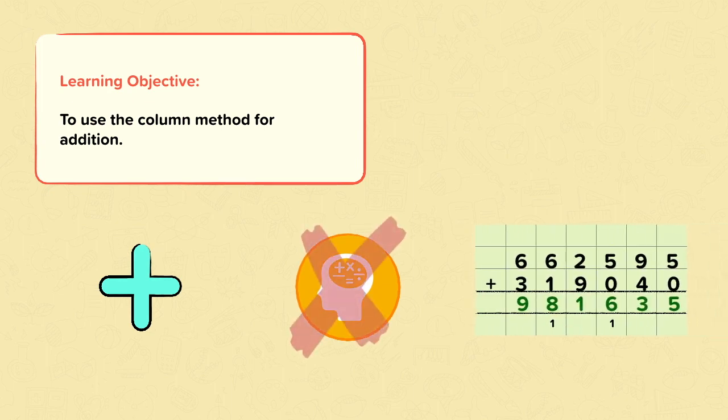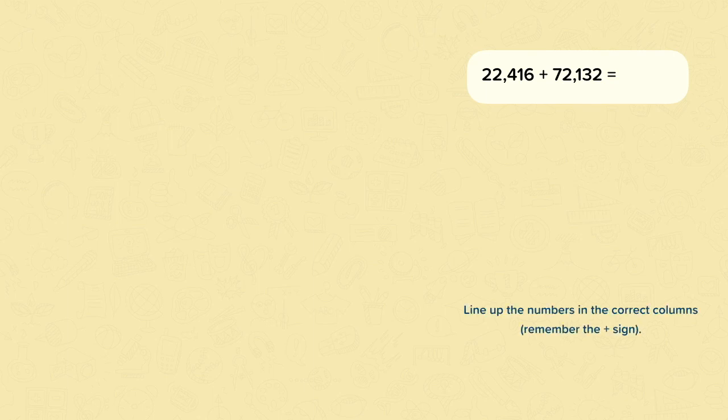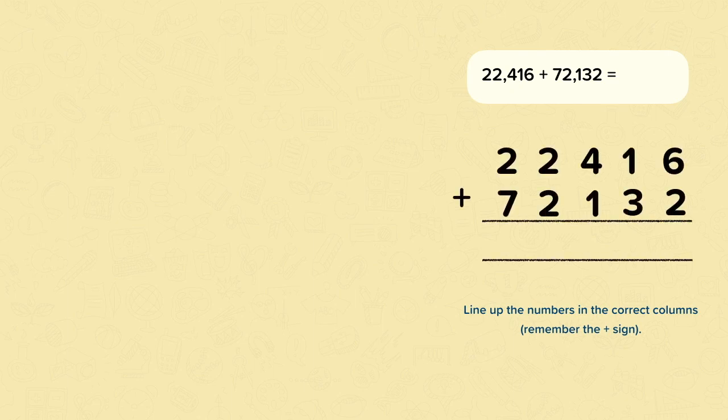This calculation here, 662,595 and 319,040, has been solved using the column method. Let's have a look at this calculation: 22,416 adds 72,132. When using the column method, you must make sure that you set out your calculation carefully. You need to line up the numbers in the correct column and you must remember the add sign. So here it is. Each digit is lined up in the correct column.